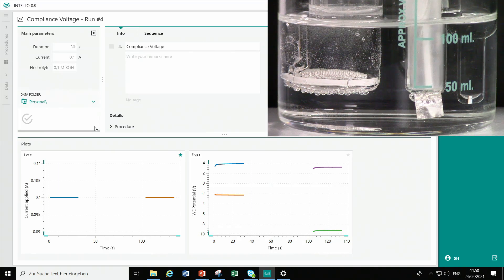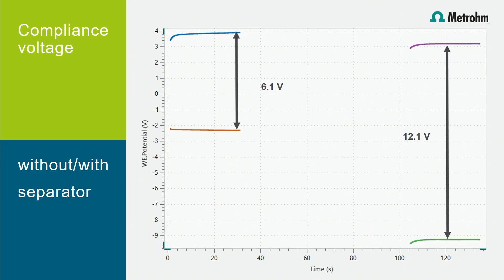To keep the current of plus 100 mA constant at the working electrode, a much higher compliance voltage is needed due to the potential drop at the separator. On the left side the measurement without separator is displayed and on the right side the measurement with separator. The voltage difference between working and counter electrode is the compliance voltage, controlled by the potentiostat to keep 100 mA constant at the working electrode. The compliance voltage had to be increased from 6V to 12V due to the glass frit. In our experiment we used a good conducting electrolyte and the frit had high porosity — if we used a less porous frit, the compliance voltage could easily reach values higher than 15V.